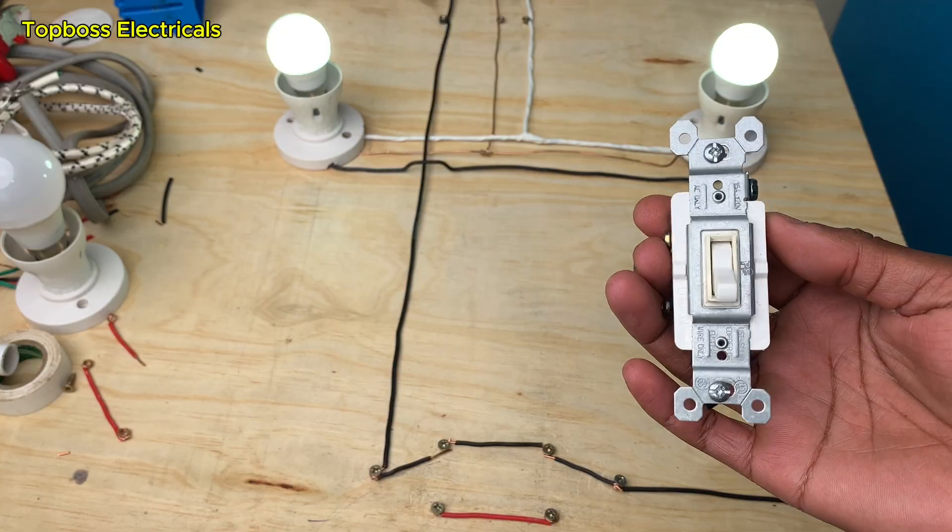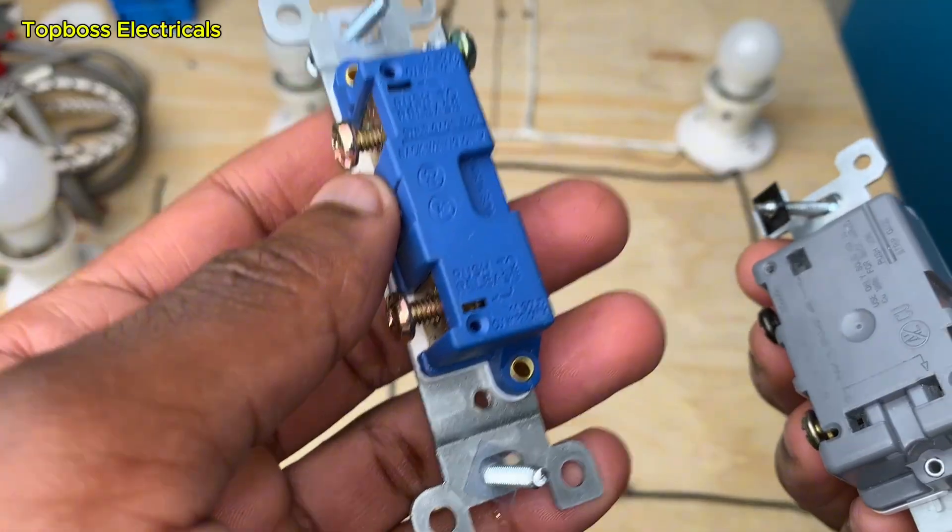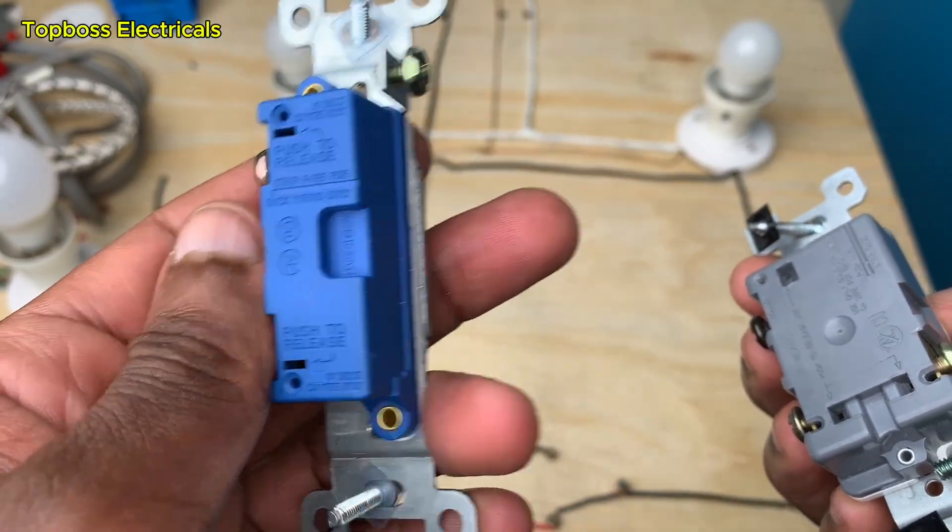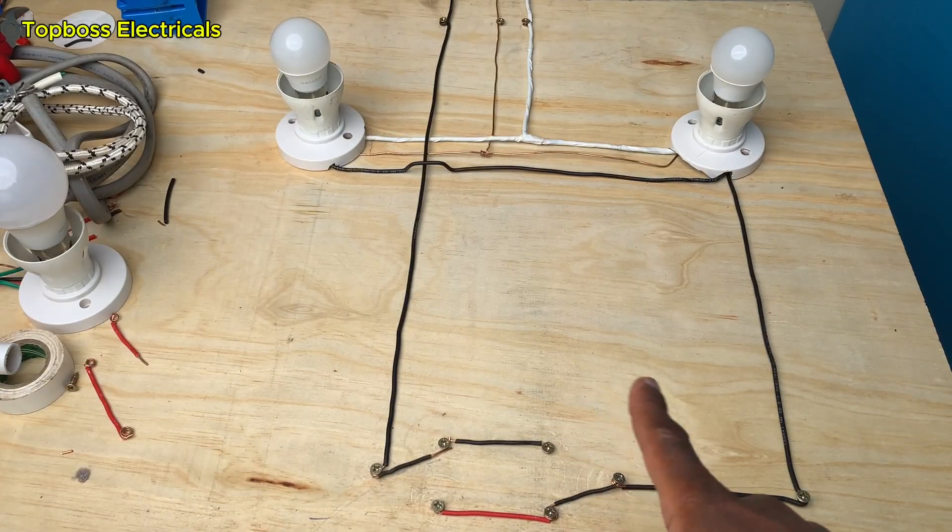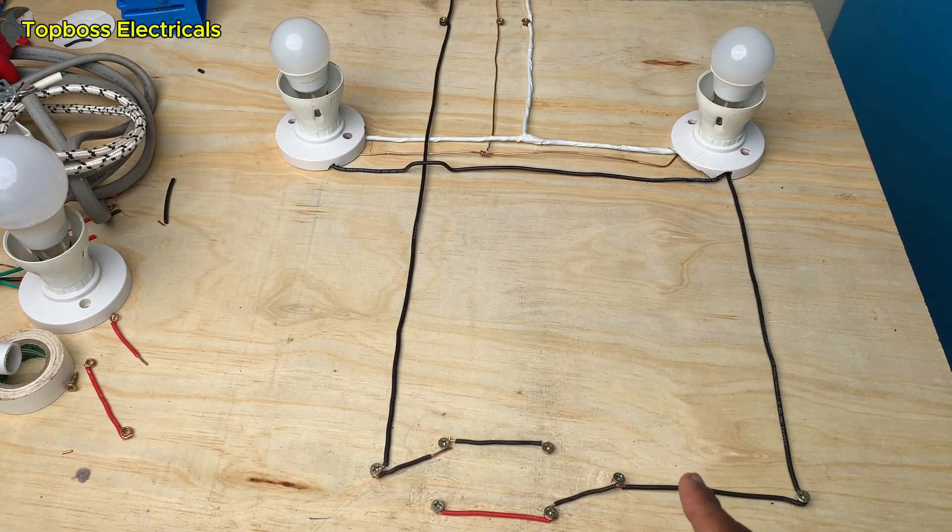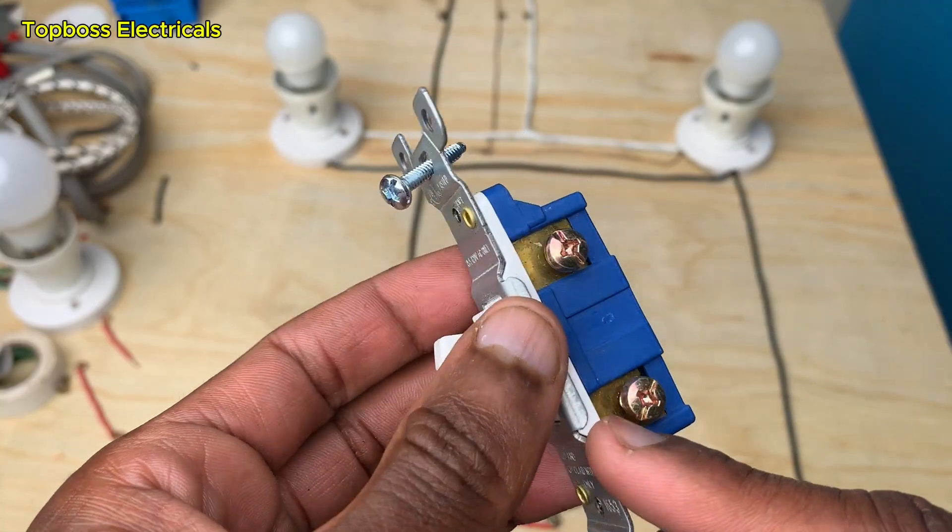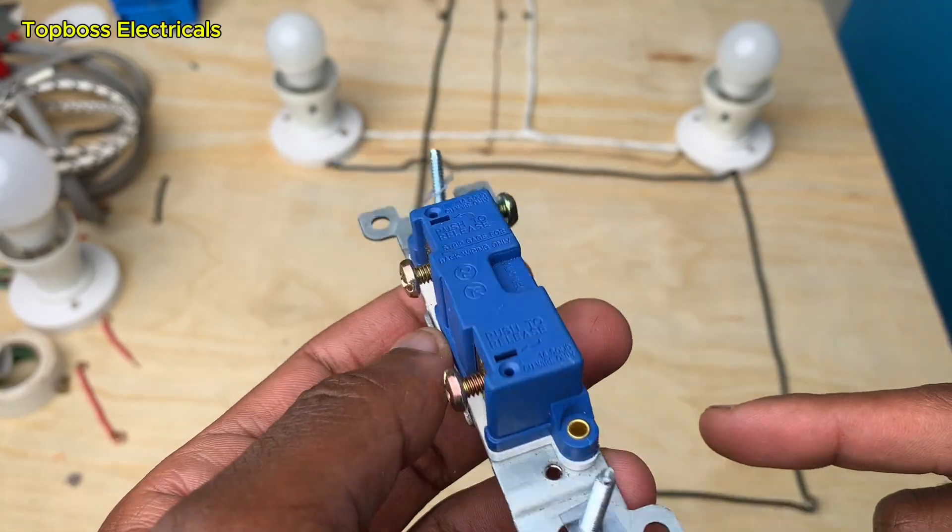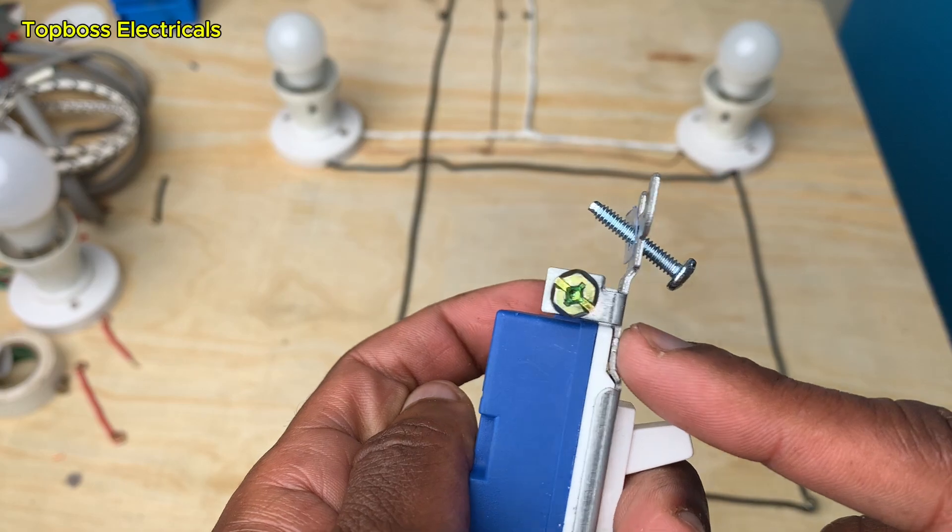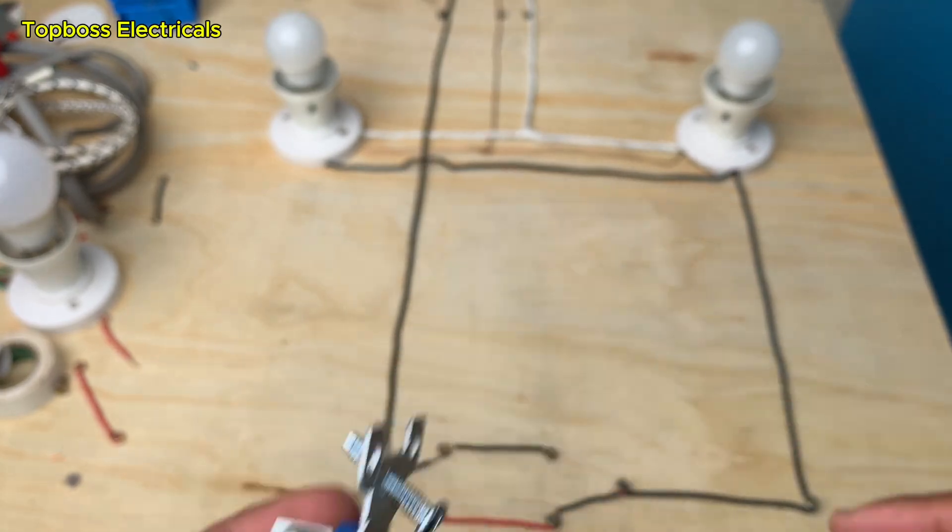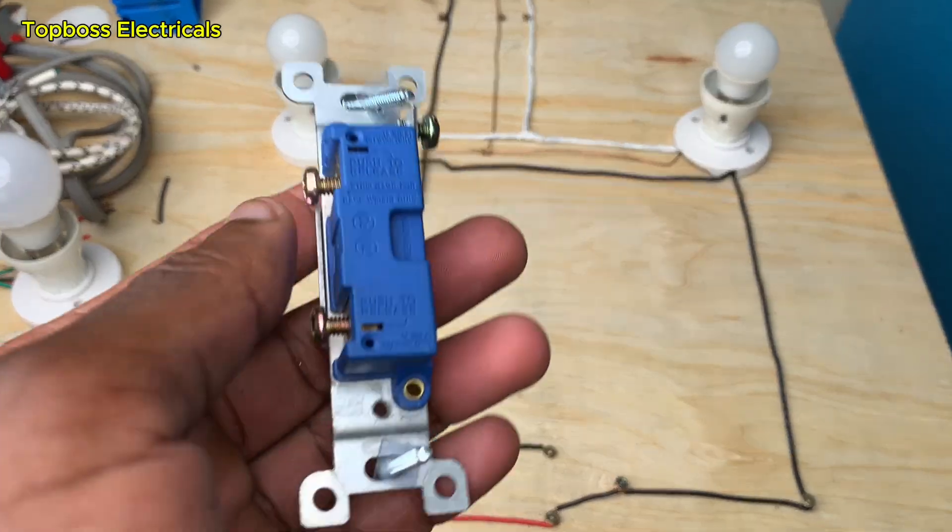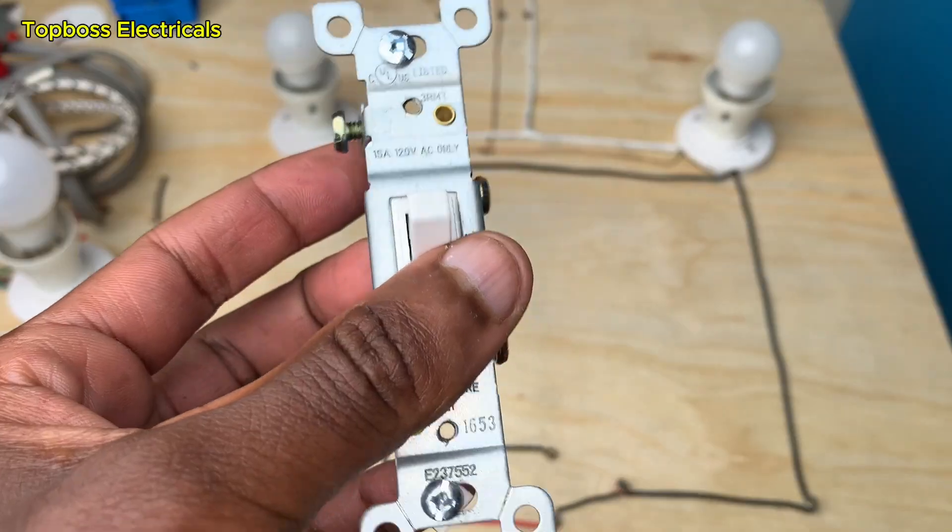This switch, which is a single pole, cannot be useful in these connections. It has the common and it has the connection screw for the light, as well as the ground screw. It can only cut the supply of current in a circuit, but this three-way switch is multi-purpose.